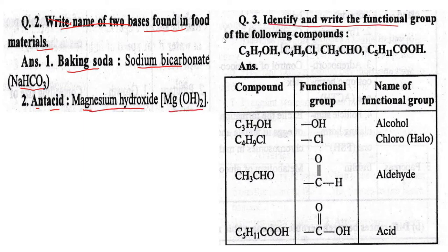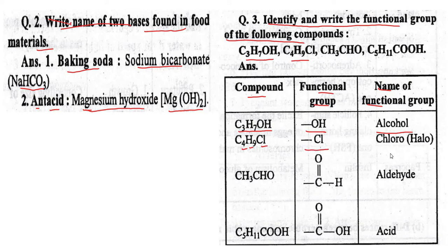Question No. 3. Identify and write the functional group of the following compounds. C3H7OH: functional group is -OH (hydroxyl). C4H9Cl: functional group is -Cl (chloro/halo). CH3CHO: functional group is -CHO (aldehyde). C5H11COOH: functional group is -COOH (carboxyl).